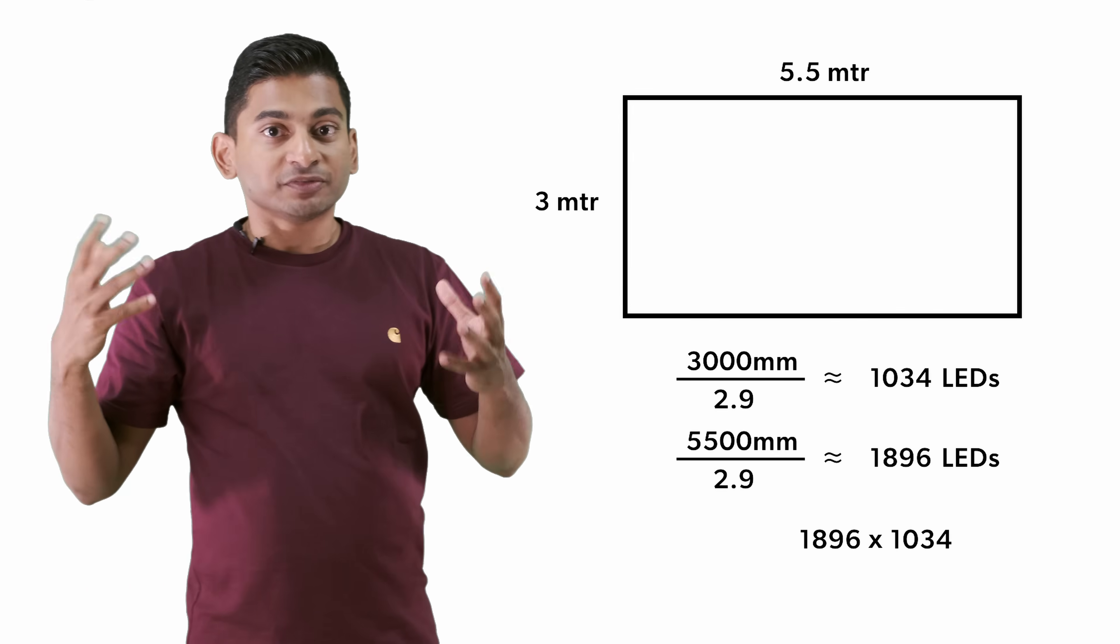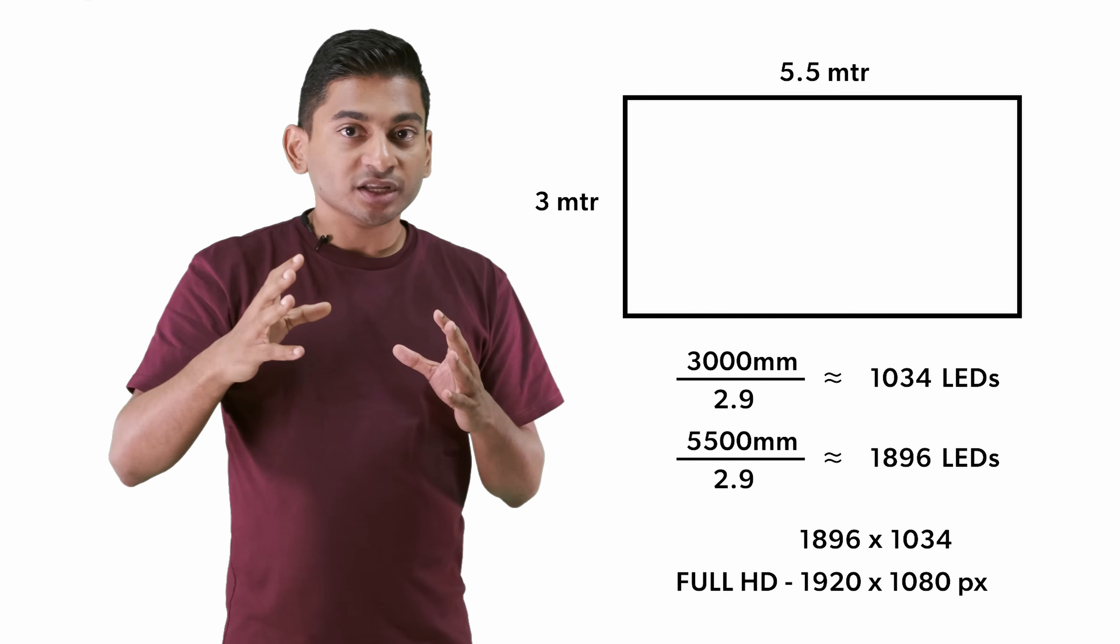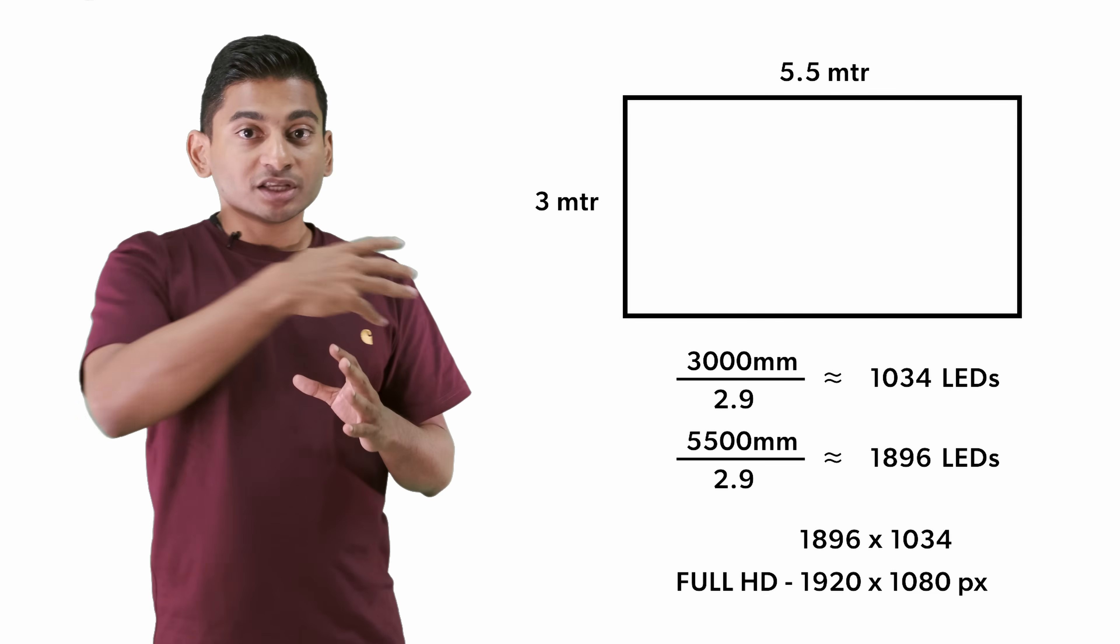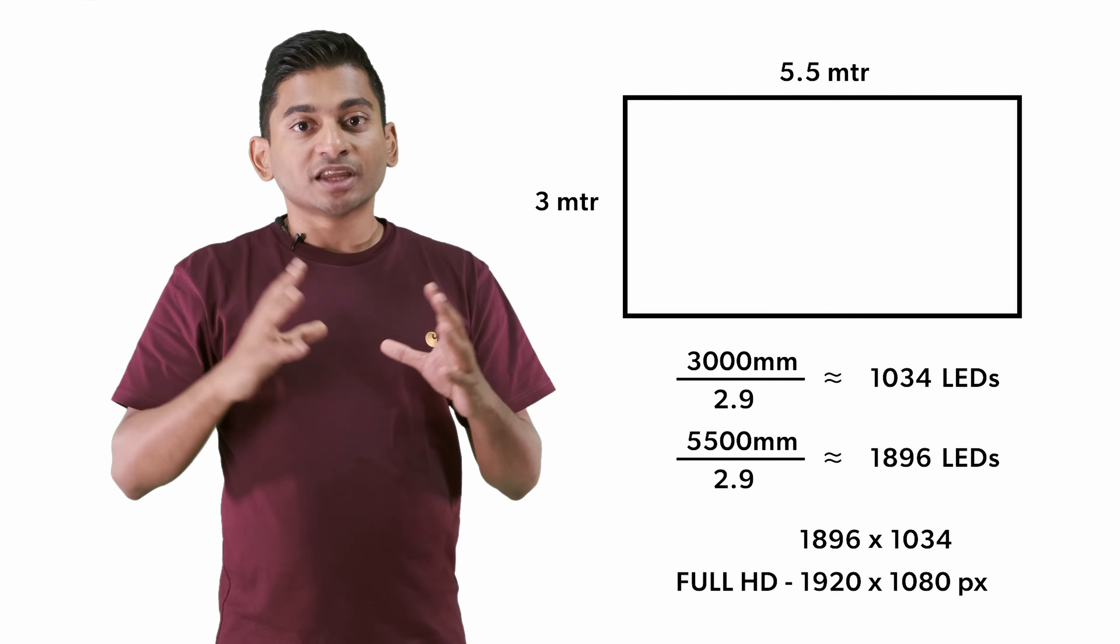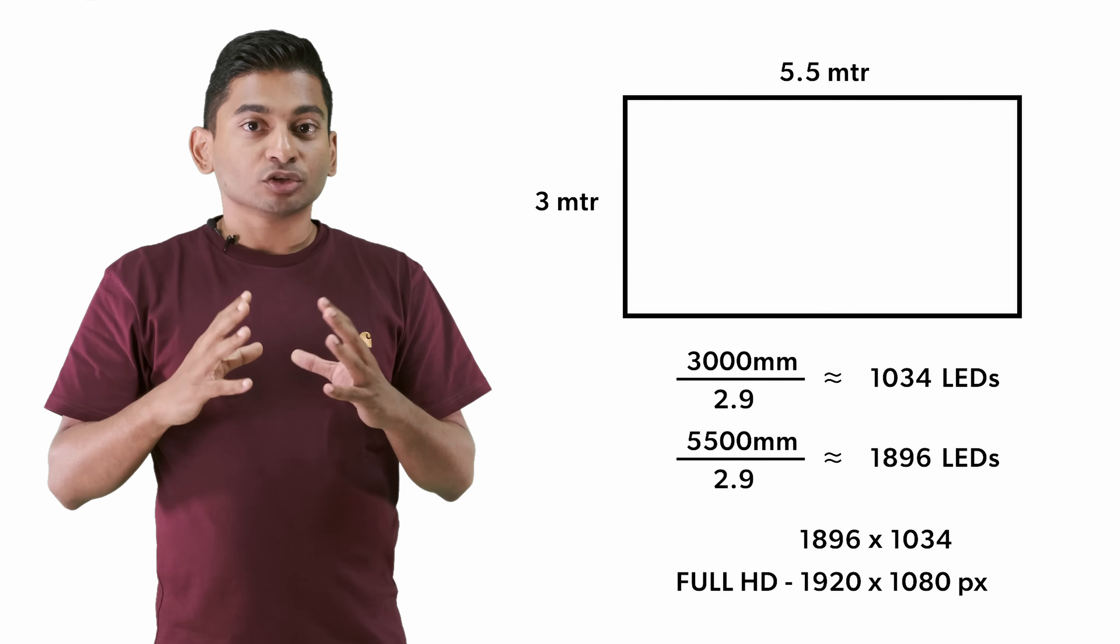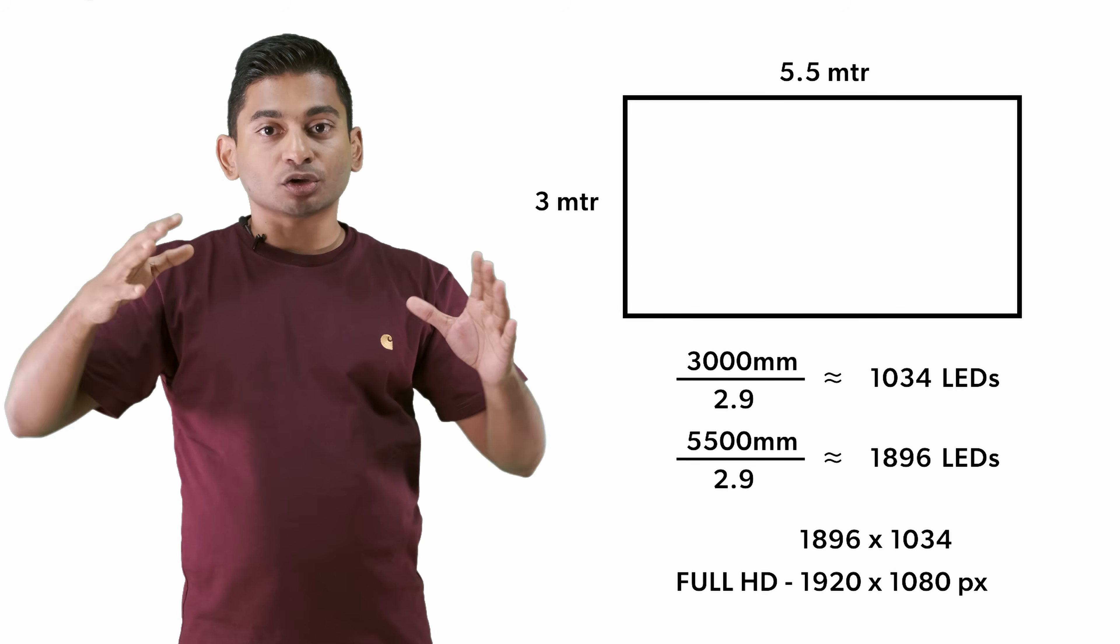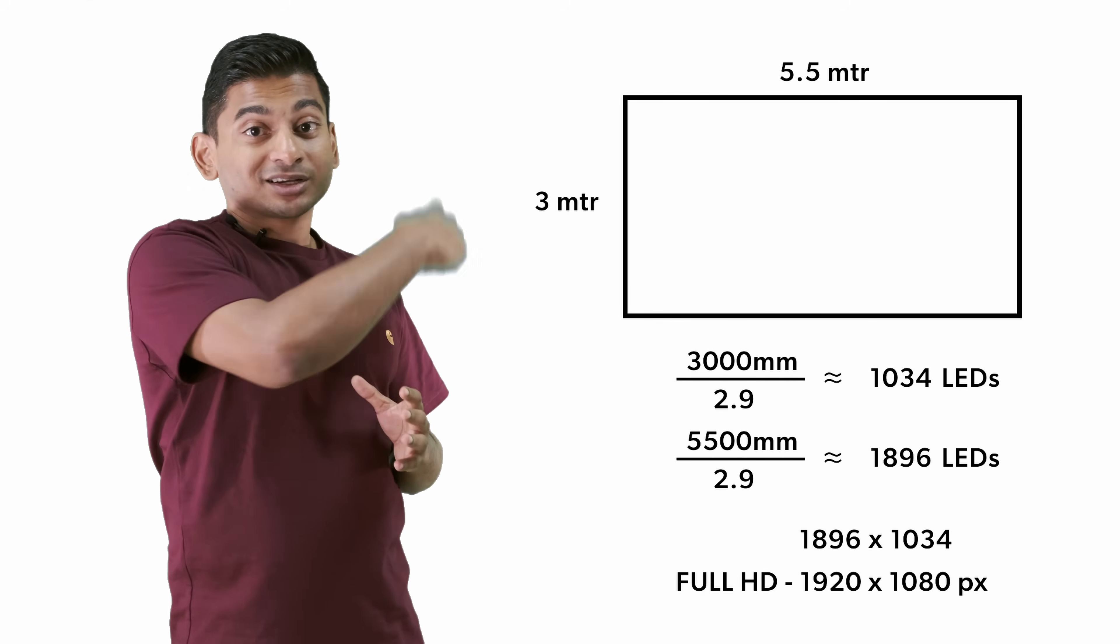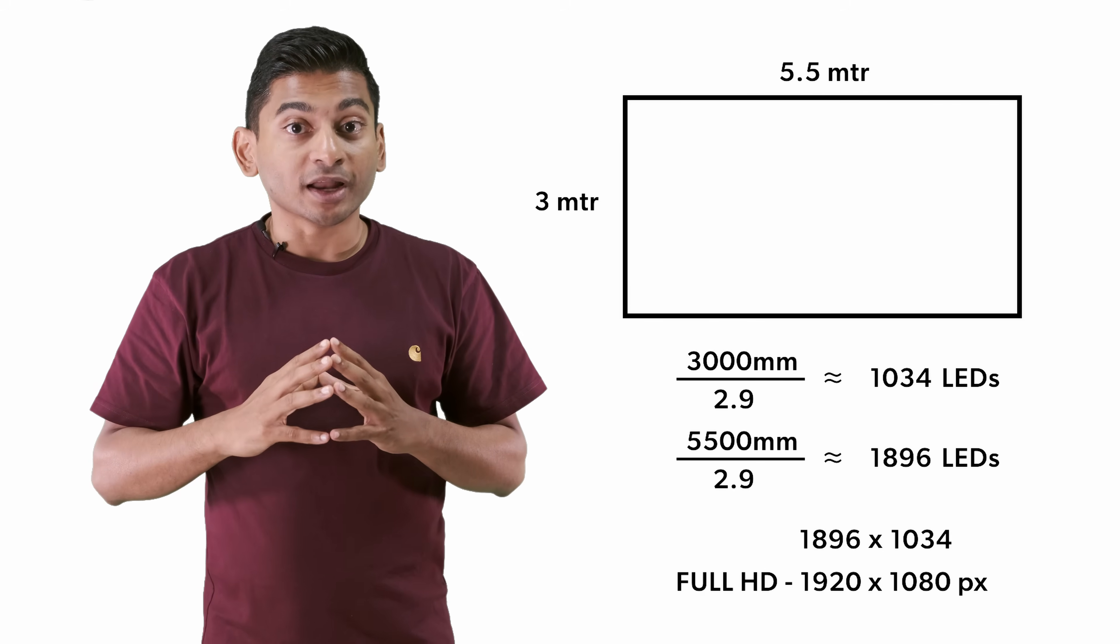By specification we know full HD means 1920 in the horizontal by 1080p in the vertical. So this 3 meter by 5.5 meter is very close to 1080 by 1920p, so it's full HD. You can imagine a normal display monitor which is 32 inches or 55 inches you have in your house which may be full HD. We need a screen of this size to arrive at full HD with 2.9 pixel pitch.